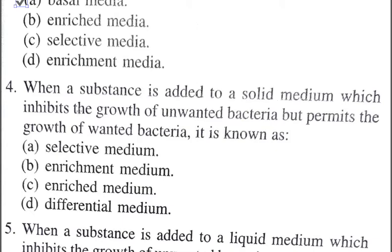Question number four: When a substance is added to a solid medium which inhibits the growth of unwanted bacteria but permits the growth of wanted bacteria, it is known as — A: selective medium, B: enrichment medium, C: enriched medium, D: differential medium. The correct answer is A, selective medium. An example is mannitol salt agar for the selective isolation of Staphylococcus aureus. It allows only the growth of Staphylococcus aureus and inhibits the growth of other bacteria.